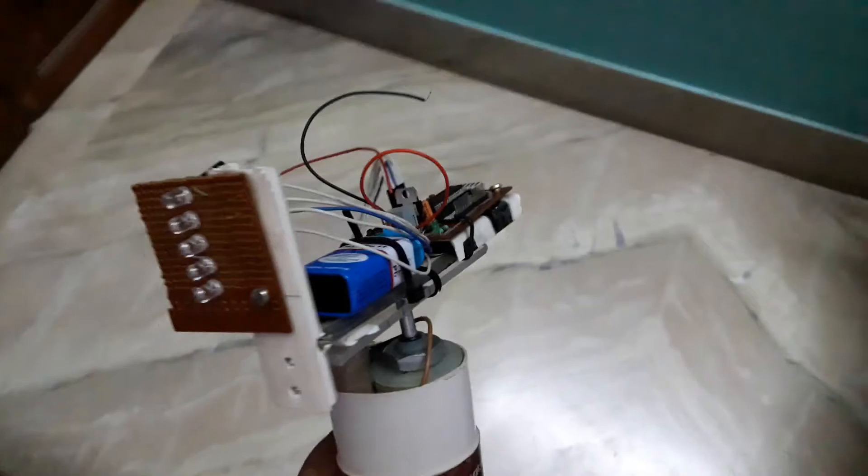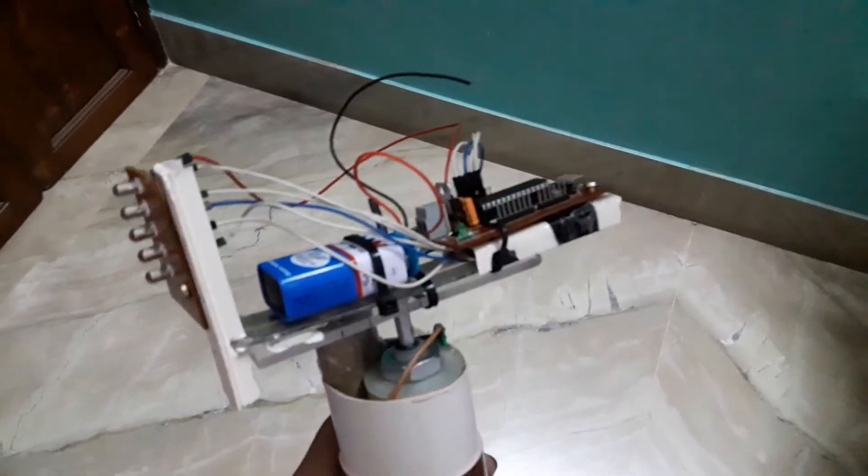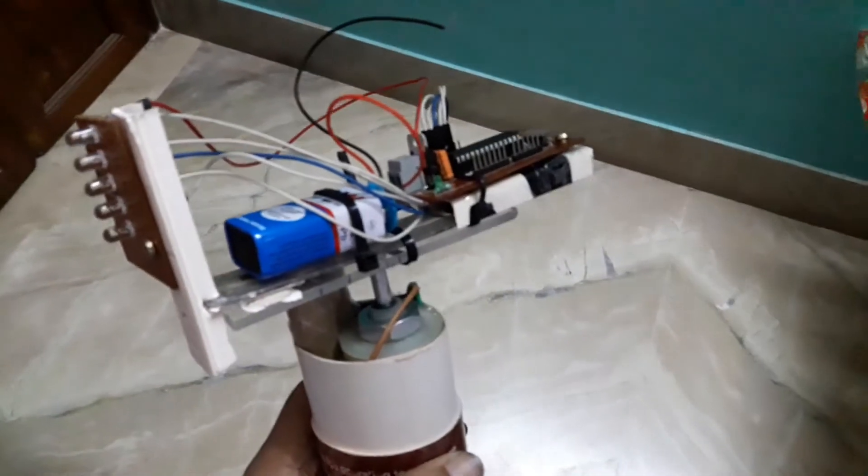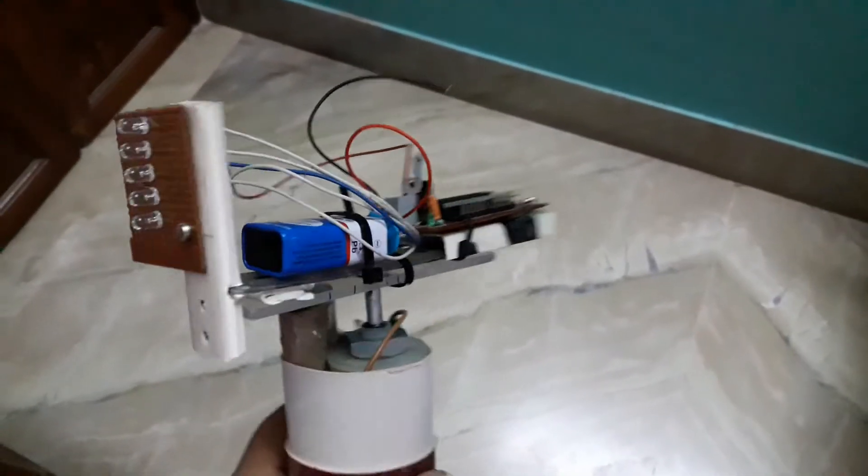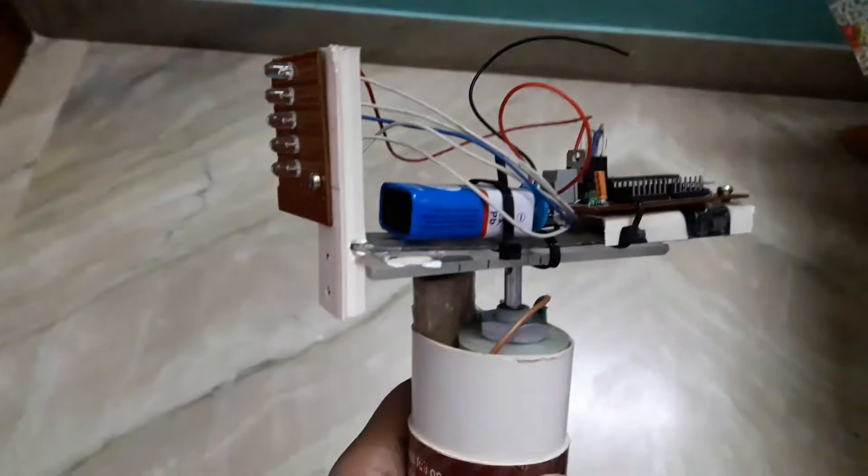Hi guys, hello everyone. The thing you are seeing here is an LED POV display using Arduino Uno. Now what is POV? The full form of POV is persistence of vision.